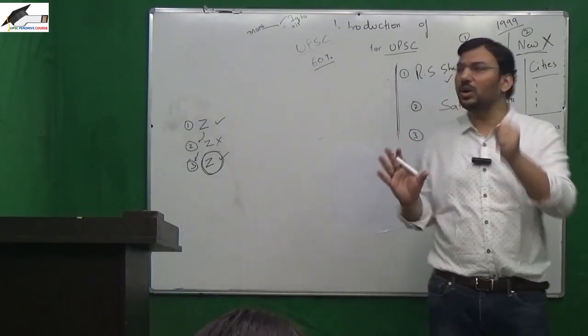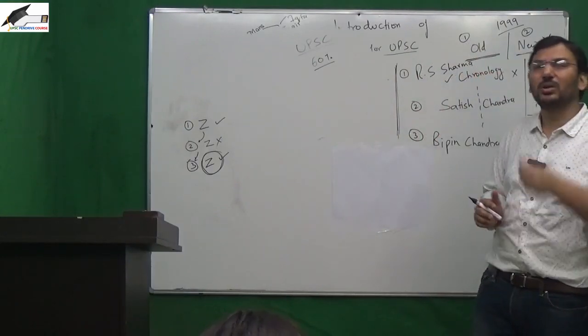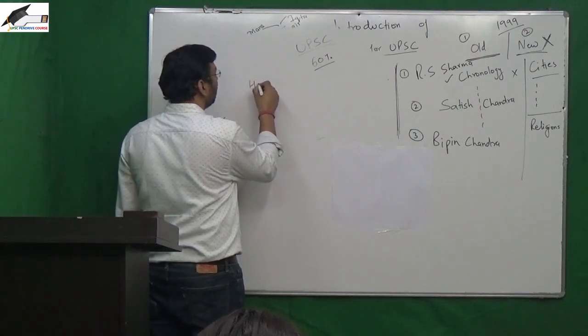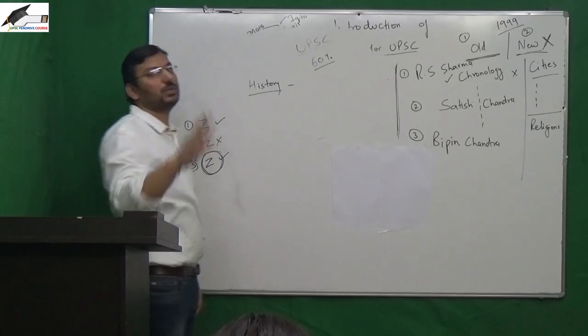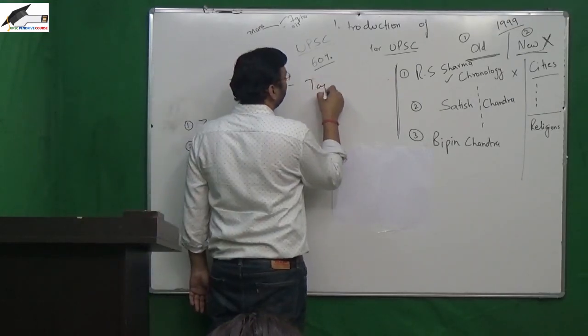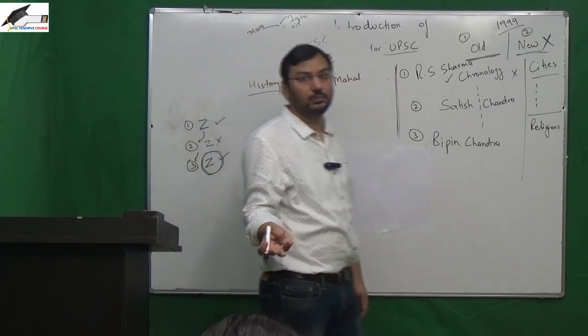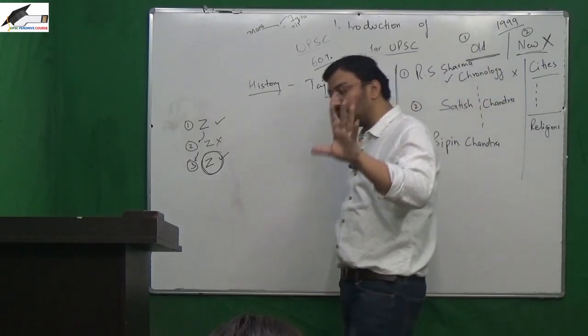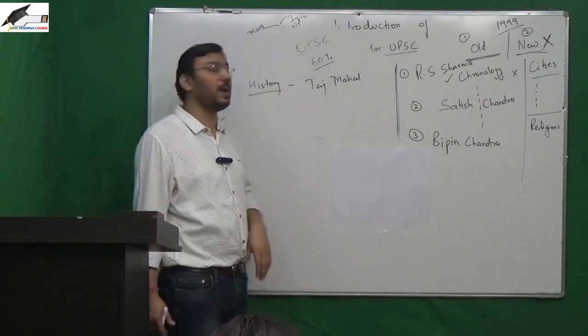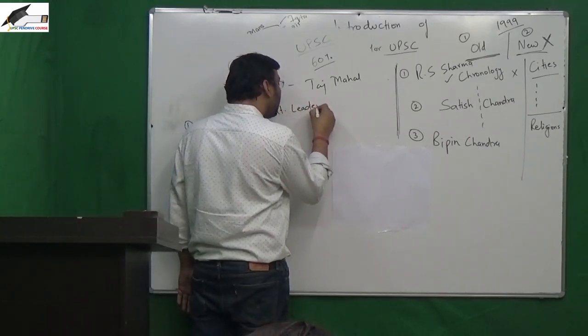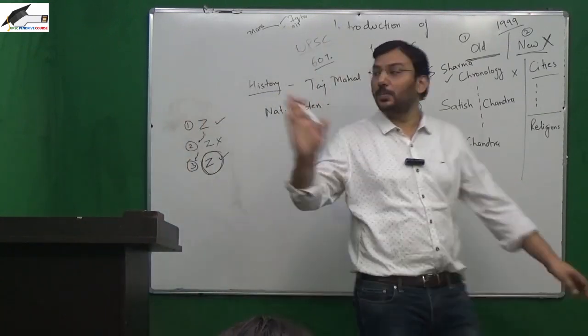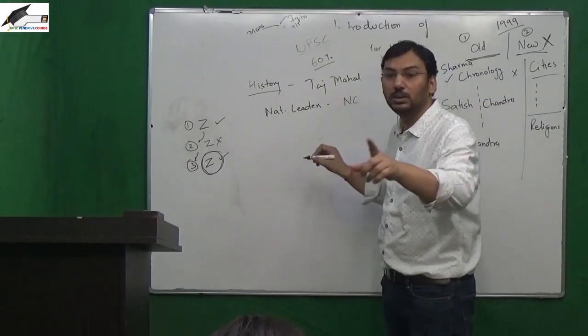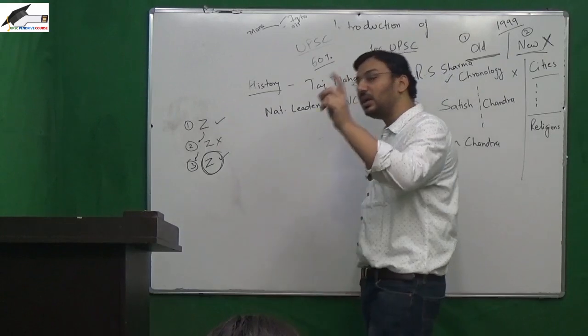Like in geography, if a student has good hold of NCERTs, believe me he will be able to understand a lot. But in history, everything is information. Everything is in your syllabus. Taj Mahal - who made it, when, where, why, under whom - all information. History is practically infinite, theoretically infinite. Everything is important. People say sir, important national leaders. Tell me an unimportant national leader. Every national leader is important in his own right.